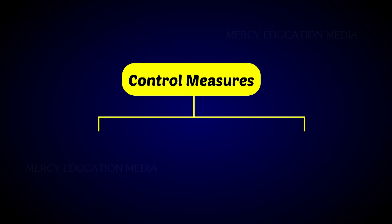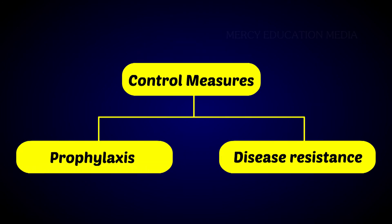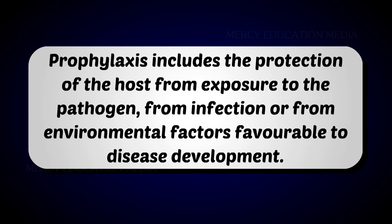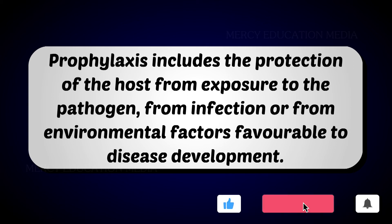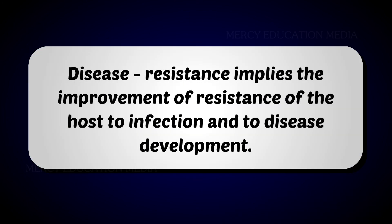The control measures are prophylaxis and disease resistance. Prophylaxis includes the protection of the host from exposure to the pathogen, from infection, or from environmental factors favorable to disease development. Disease resistance implies the improvement of resistance of the host to infection and disease development.